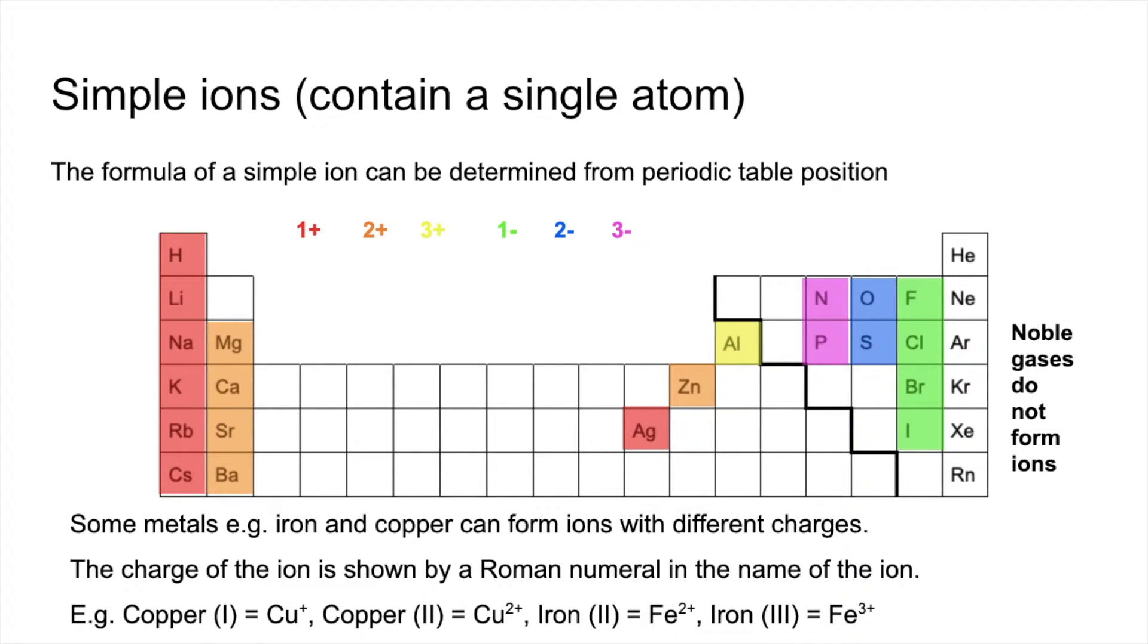And likewise for iron, that typically would form iron Roman 2, so Fe2 plus, and iron Roman 3, Fe3 plus.